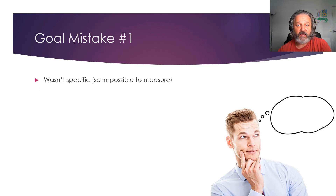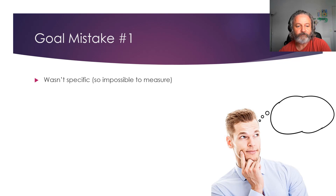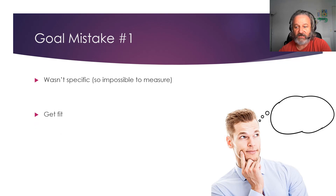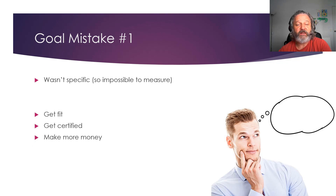The first problem with goals is people don't set specific ones. If you don't set a specific goal, it's actually impossible to measure it. 'Get fit' isn't a specific goal because you've got no way of knowing when you've actually achieved it, so you don't feel any sort of success. 'Get certified' also doesn't mean anything — certified in what, and when? 'Make more money' is another good example. Not being specific with your goals is a key mistake.